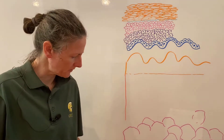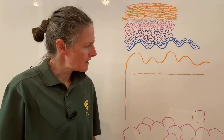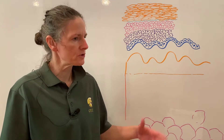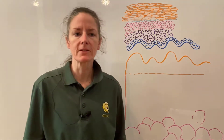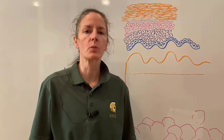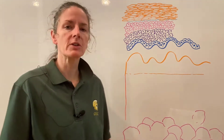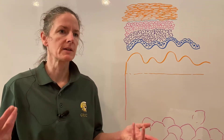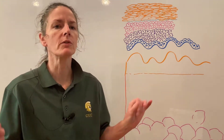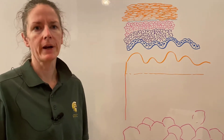The integument is simply a fancy word for your skin, and it consists of two major parts: the cutaneous membrane, which is one of the membranes studied in the previous chapter, and the accessory structures, such as hair and fingernails. Now let's look at the cutaneous membrane.